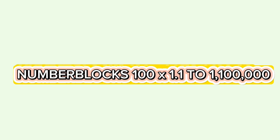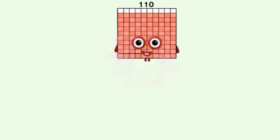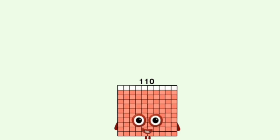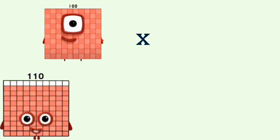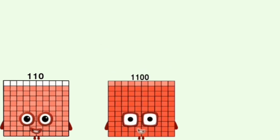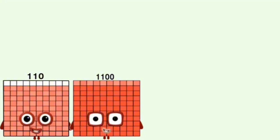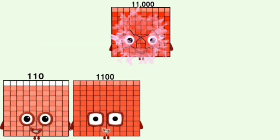Number Blocks: 100 times 1.1 equals 1,100,000. 100 times 1.1 equals 110. 100 times 110 equals 1,100. 100 times 110 equals 11,000.